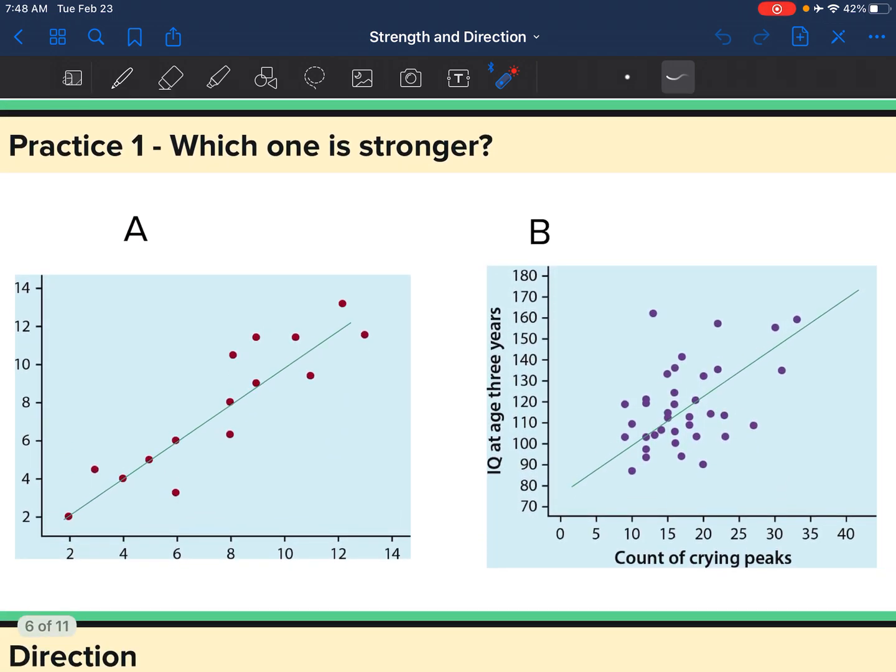So in this one, A is going to be stronger. When I draw that line, more of these points are closer to the line. Whereas in B, there's a lot more spread here.